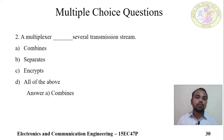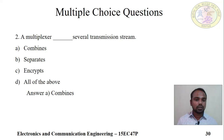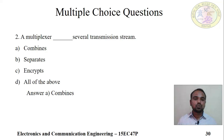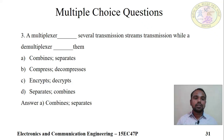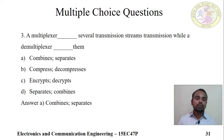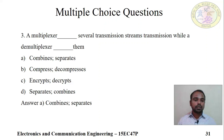Second question: A multiplexer does dash to several transmission streams. Options are combines several channels, separates, encrypts, or all of the above. The correct answer is: it is used to combine several transmission channels. Third question about multiplexer and demultiplexer: a multiplexer combines several transmission streams while a demultiplexer is used for dash. Options: combine or separate, compress or decompress, encrypt or decrypt. Correct answer is combine and separate — option A.